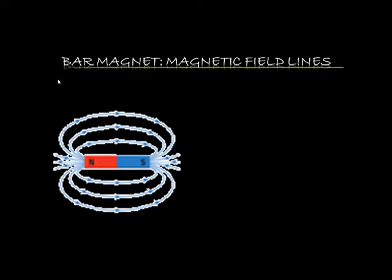This one I'm stopping at. You need to realize that magnetic field lines are drawn outside the magnet from north to south pole.